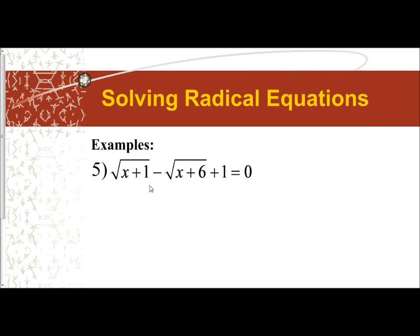We notice in this problem we have two radicals and they're on the same side. The first instinct of some students is to say, well, I can just square the entire side. We can't do that because squaring a three-term expression is not as simple as squaring the first term, squaring the second term, and squaring the third term. The square does not distribute across each term. Not only do we have our two radical expressions, we also have an integer, a constant on the outside — this plus one we have to take into consideration as well.